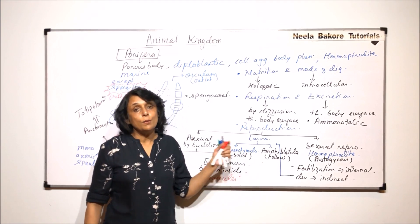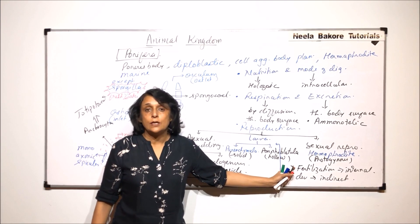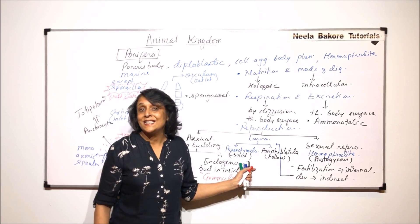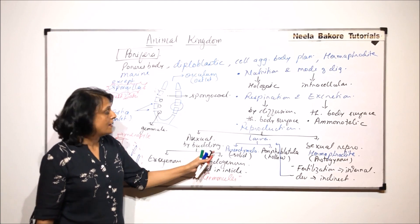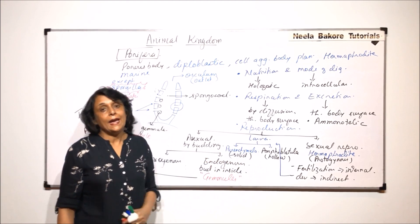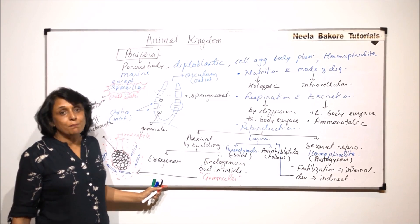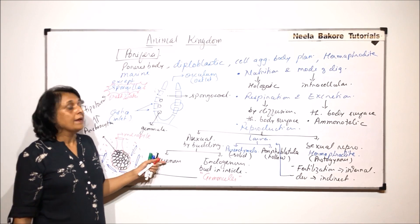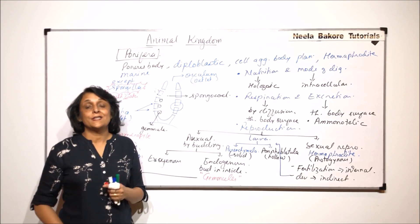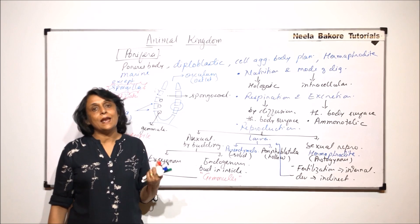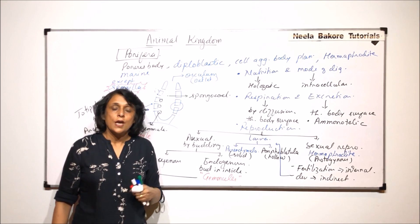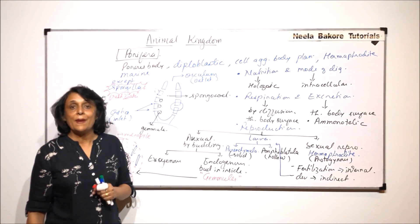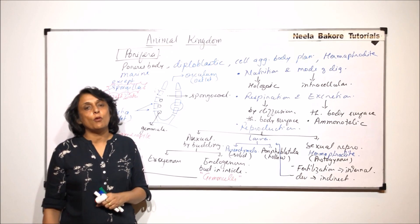So in sexual reproduction there is gamete formation, internal fertilization, and indirect development with a larval stage — solid or hollow. Asexual reproduction is by budding — endogenous or exogenous. We have already seen the types of skeletons: endoskeleton, which can be calcareous or siliceous. In the next part we will talk about the classification of Porifera and discuss certain important examples.